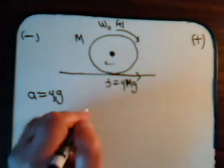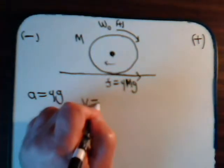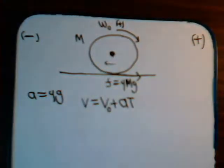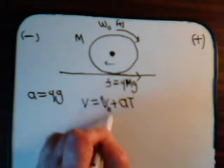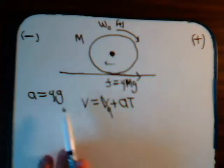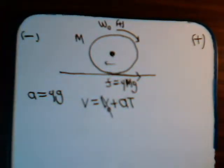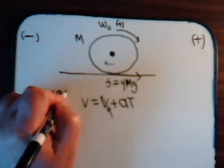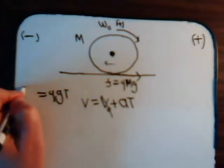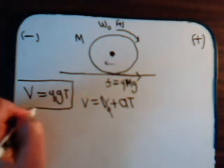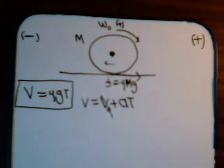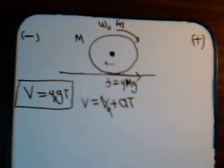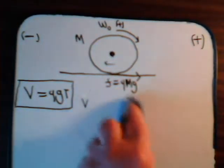In general, linear velocity equals initial velocity plus acceleration multiplied by the time. For this problem, the initial velocity is zero and the acceleration is μg. So at any time, the linear velocity equals μg times t. Notice that, at least for a period of time, the linear velocity increases with time. That's one effect that the friction has.